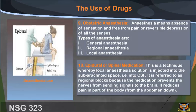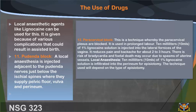9. Obstetric anesthesia: anesthesia means absence of sensation and freedom from pain, or reversible depression of all the senses. Types of anesthesia are: 1. General anesthesia, 2. Regional anesthesia, 3. Local anesthesia. 10. Epidural or spinal medication: this is a technique whereby local anesthesia solution is injected into the subarachnoid space, that is, into the CSF. It is referred to as a regional block because the medication prevents the nerves from sending signals to the brain. It reduces pain in parts of the body from the abdomen down. Local anesthetic agents like lignocaine can be used for this.